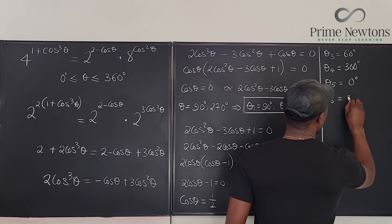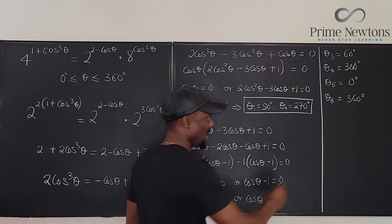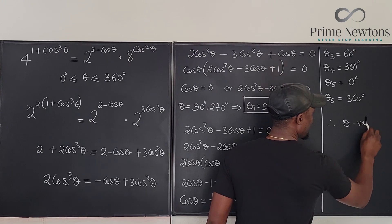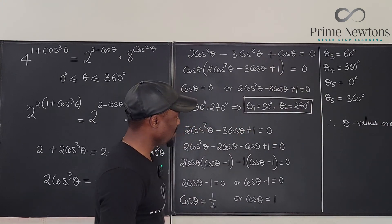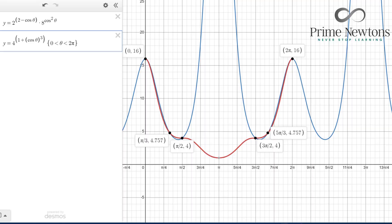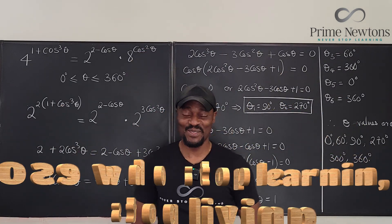Therefore, listing from smallest to largest, the values of theta are: 0°, 60°, 90°, 270°, 300°, and 360°. Any of these angles will satisfy the original equation. Never stop learning — those who stop learning, stop living. Bye-bye.